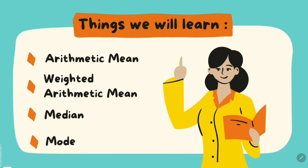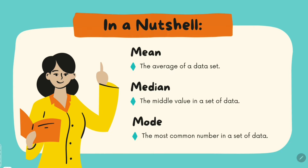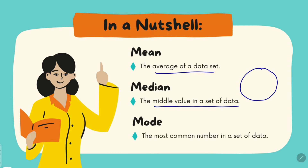In this video, we will be learning about arithmetic mean, weighted arithmetic mean, median, and mode — so two types of mean, median, and mode. In a nutshell: mean is the average of a data set, whether it be harmonic, geometric, arithmetic, or weighted. Median indicates the middle value of a data set — if this circle represents my entire data, median will divide it into exactly two equal portions. And mode is the most common number in a data set — the one which occurs the most.